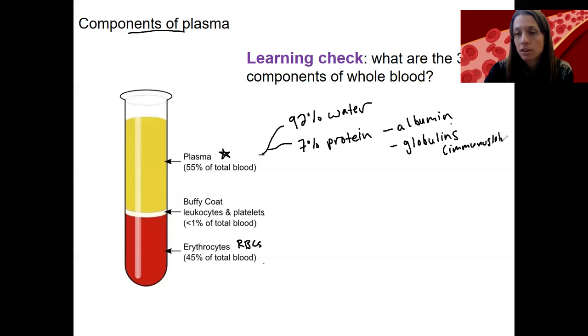So, and these are very prevalent, there's a diversity of types. Lastly, the least abundant is fibrinogen. And this is that clotting factor.